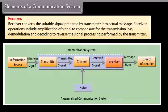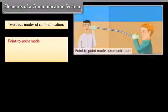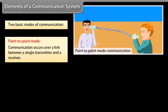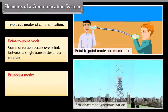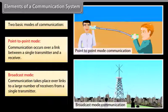Receiver operations include amplification of signal to compensate for the transmission loss, and demodulation and decoding to reverse the signal processing performed by the transmitter. Two basic modes of communication: Point-to-point mode, where communication occurs over a link between a single transmitter and a receiver; and broadcast mode, where communication takes place over links to a large number of receivers from a single transmitter.